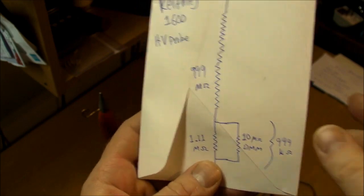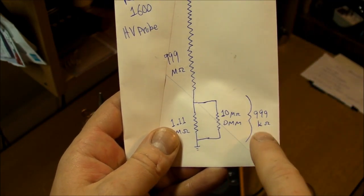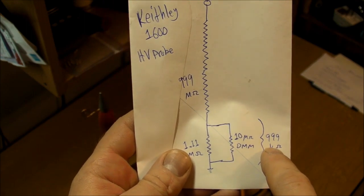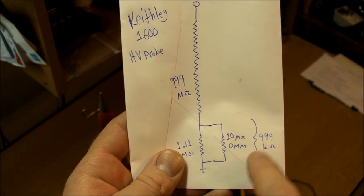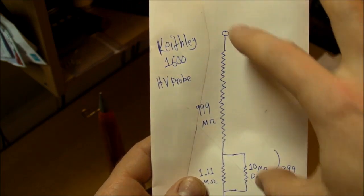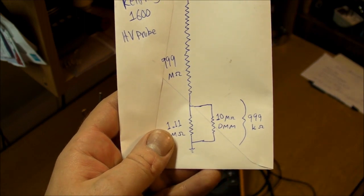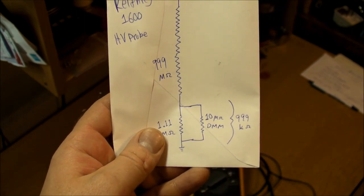Then at the bottom there's another 1.1 megohm resistor that gets hooked up in parallel to the 10 megohm impedance of your typical handheld DMM for an equivalent parallel of 999 kilohm, which is almost exactly one thousandth of the sum resistance of the whole thing. Very basic voltage divider, one thousand to one network.